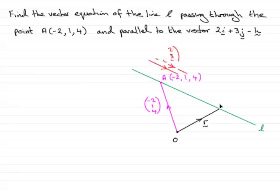So in other words then, I can get to any point on the line by saying that R equals O to A, which is the vector (-2, 1, 4).